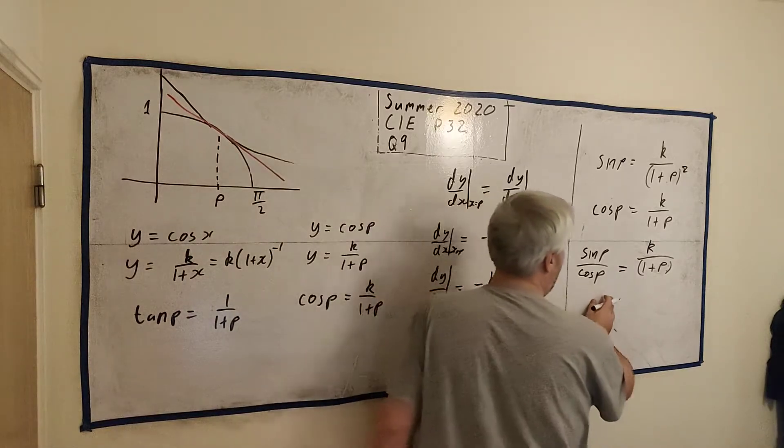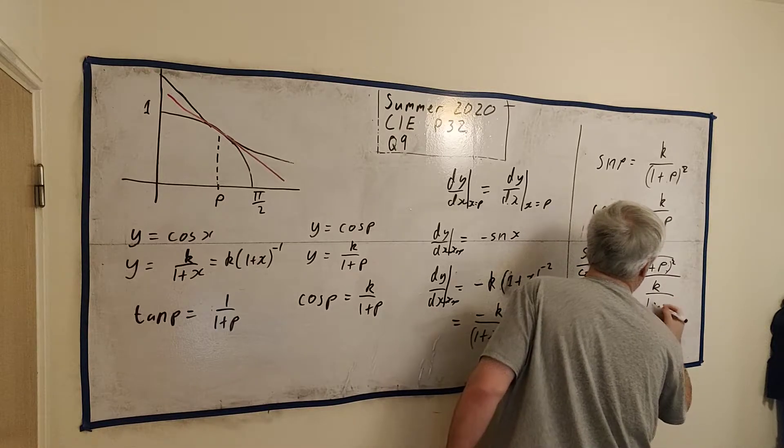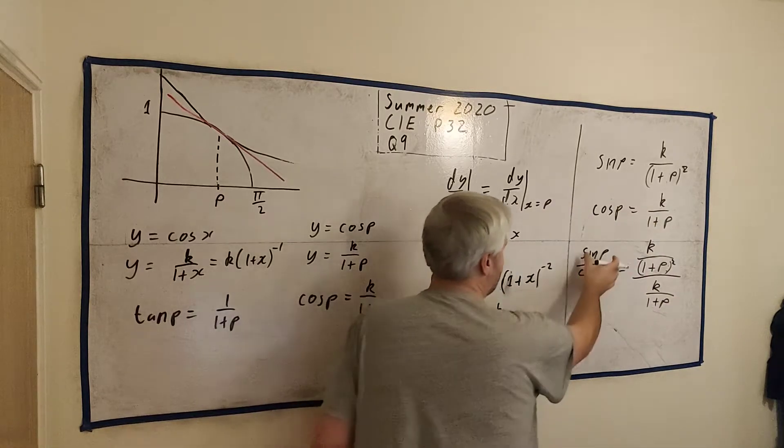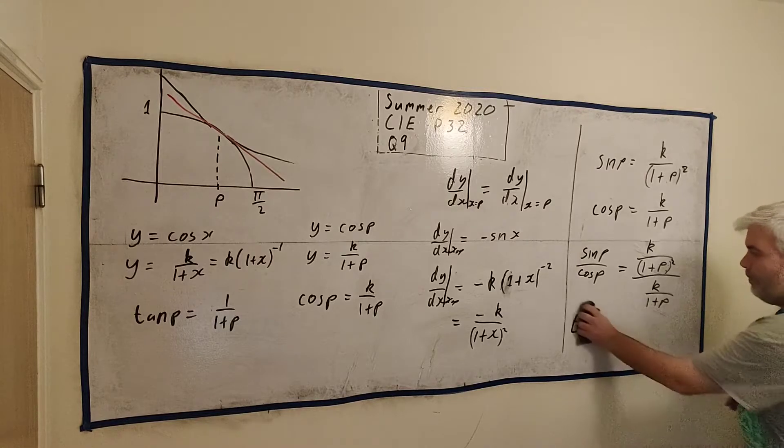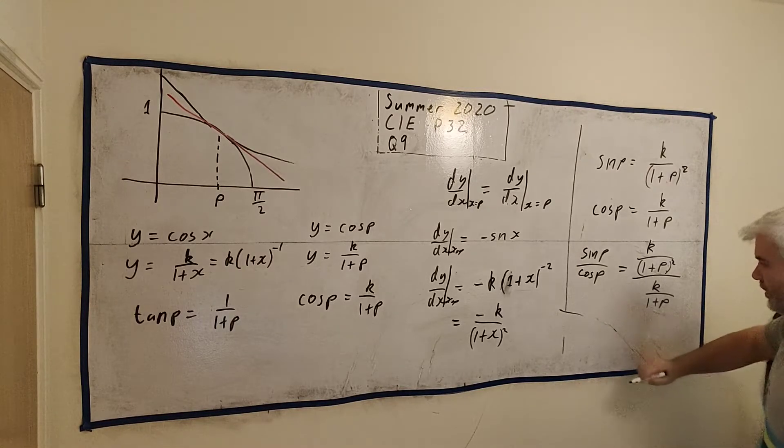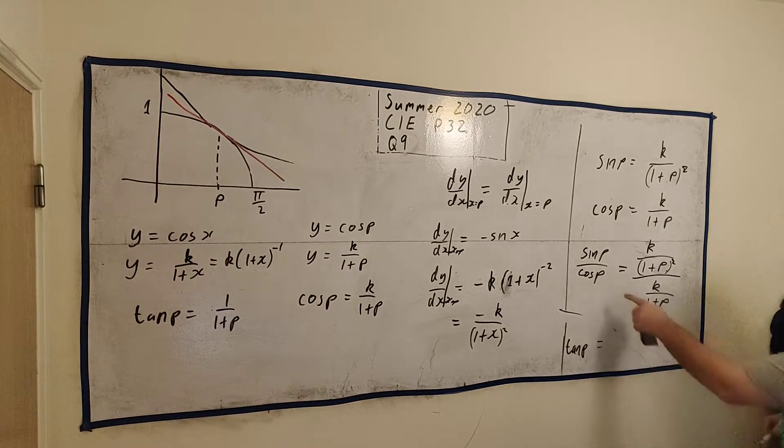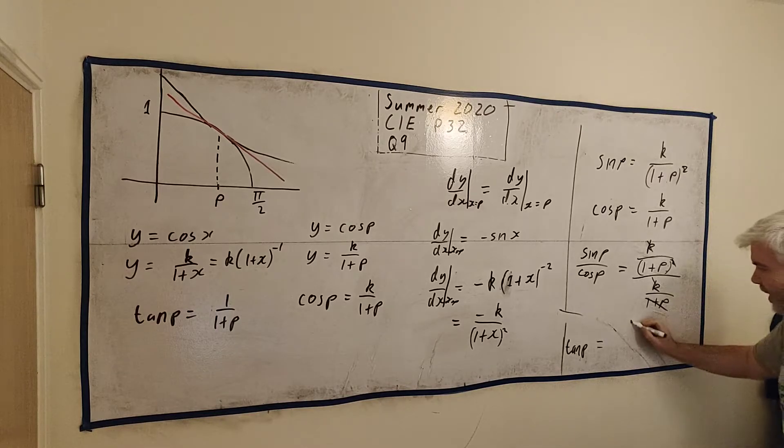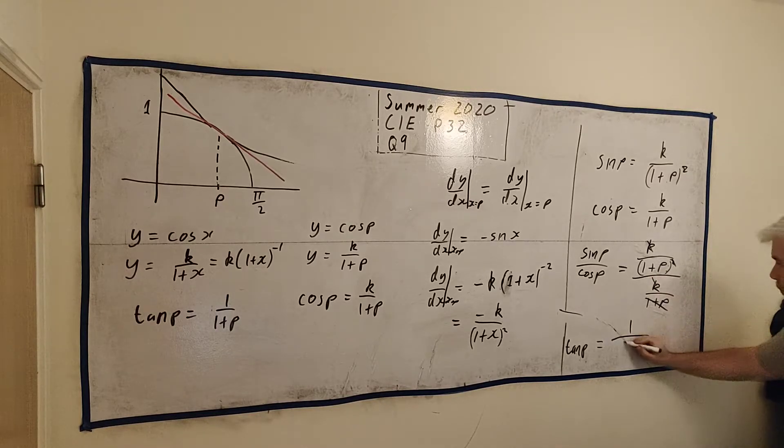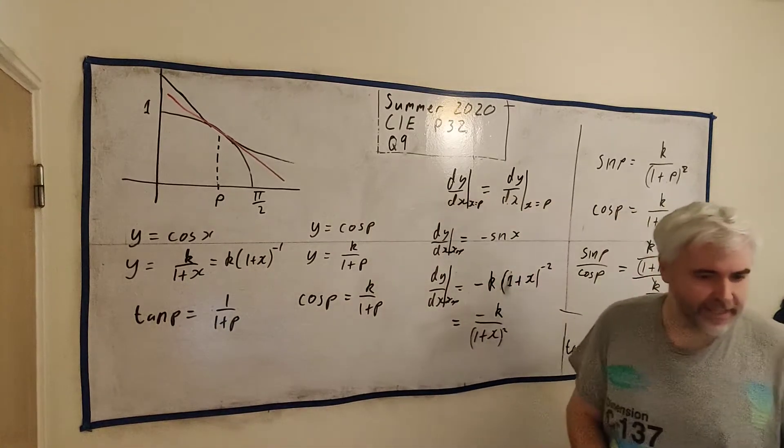So, this is just the top row divided by k over 1 plus p. Let's see, what do we get? Sine p divided by cosine p is tangent p. On this side, k divides the k, 1 plus p divides the 1 plus p. So we're left, k divided by k is 1, and we're left with 1 plus p on the bottom. And that's what they wanted. That's what they wanted us to show. That's the answer to part A there.